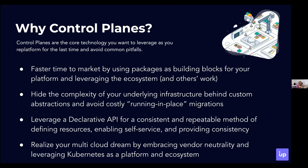Another big advantage of using a control plane, specifically Crossplane, is declarative APIs. You can define exactly what you want in your infrastructure, and a Crossplane control plane will ensure your infrastructure always matches that state. You don't get anything you didn't ask for, and if something magically shows up, Crossplane will reconcile and ensure those resources are no longer running. The last big advantage is that Crossplane's cloud abstraction layer allows you to realize the multi-cloud dream — being able to leverage functionality from multiple cloud providers. Your end users don't care where something is running, only that it is running. This is true vendor neutrality.